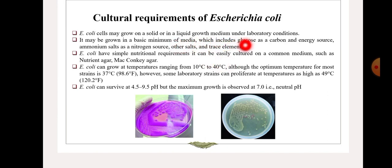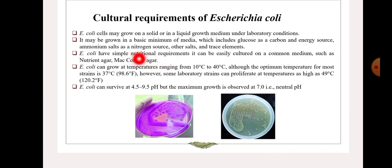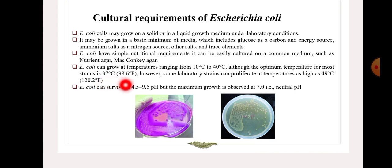Moving to the next slide — cultural requirements of E. coli. E. coli cells may grow on solid or in liquid medium under laboratory conditions. In the microbiology laboratory, we grow E. coli on nutrient agar and MacConkey agar. The nutrient requirements — energy sources, ammonium salts as nitrogen source, and other salts and trace elements — help the growth of E. coli. E. coli can grow in a temperature range from 10°C to 40°C; the optimum temperature for most strains is 37°C.